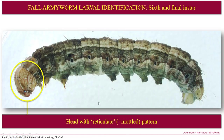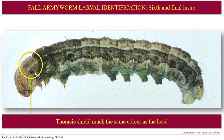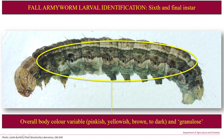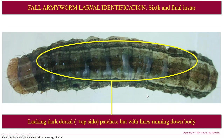Here's the sixth and final instar. Characteristics to look for are a head with a reticulate pattern — a mottled, patchy appearance on the head. The thoracic shield, like a collar just behind the head, is generally of a very similar colour to the head. The overall colour itself can be quite variable, from pinkish, yellowish, brownish to dark, to almost quite black in appearance. They tend to have a granulose mottled appearance. They lack dark dorsal patches, and have pale, alternating, relatively ill-defined lines running longitudinally up and down the body, which become more clear in this later instar.